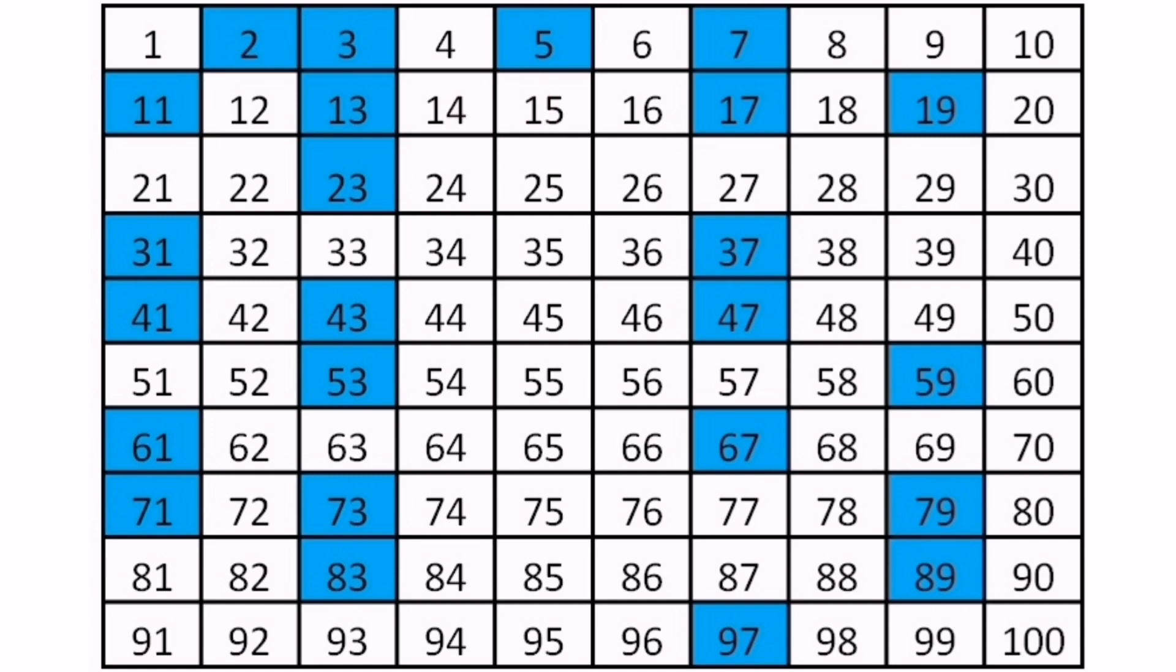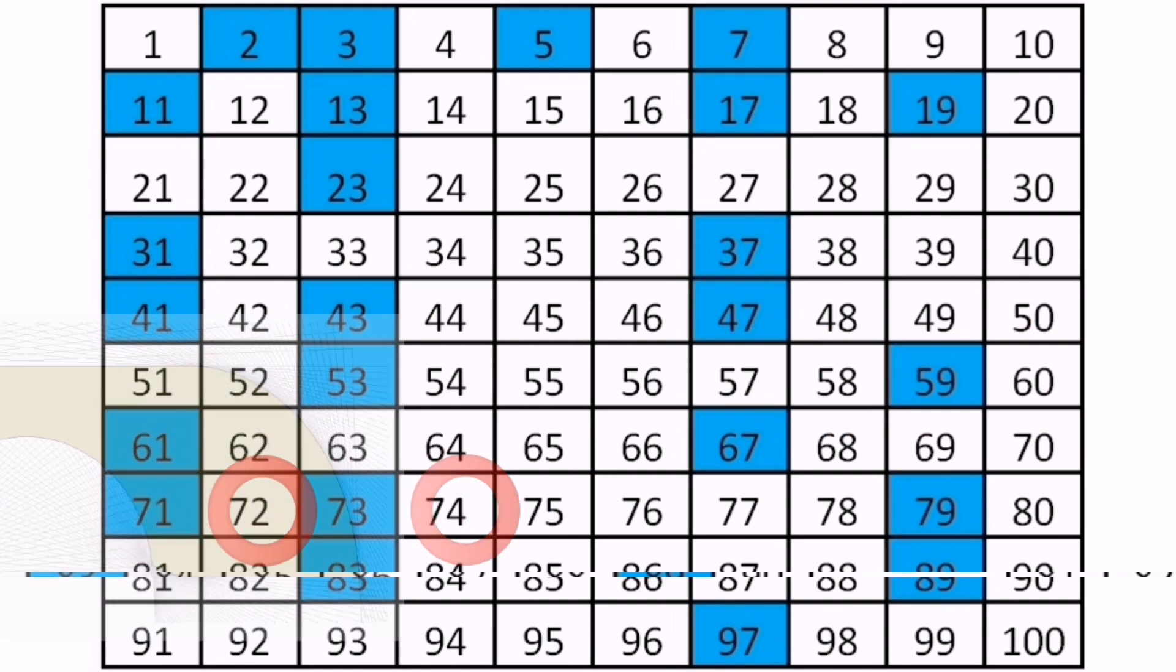For example, 3 and 5, or 5 and 7, are twin primes. As numbers get larger, primes become less frequent. It is yet to be proven is there an infinite number of twin primes?